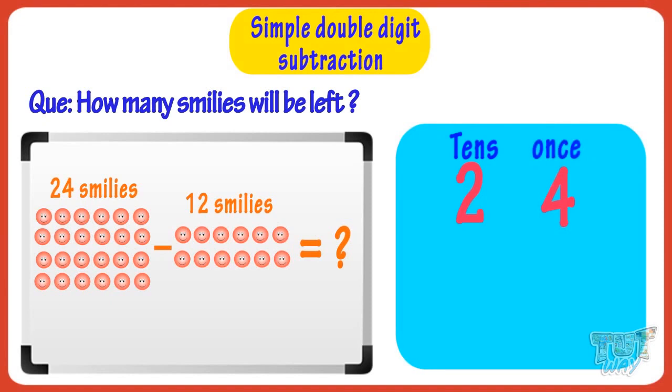Now take the other number, that is 12. Write 12 as 2 is in the ones place digit. So write it below 4. 1 is in the tens place digit. So write it below 2.